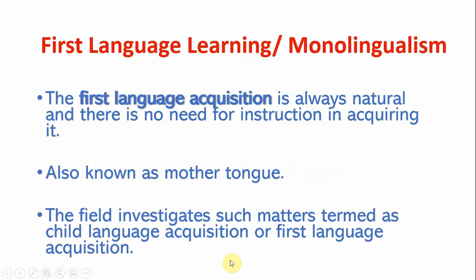So what is first language learning, or what we call monolingualism? First language acquisition is always natural — there is no need for instruction in acquiring it. It is a child language learning process, and it is an unconscious, painless process for the child, because he or she learns it unconsciously, essentially just enjoying life while acquiring that language. It is also known as the mother tongue.